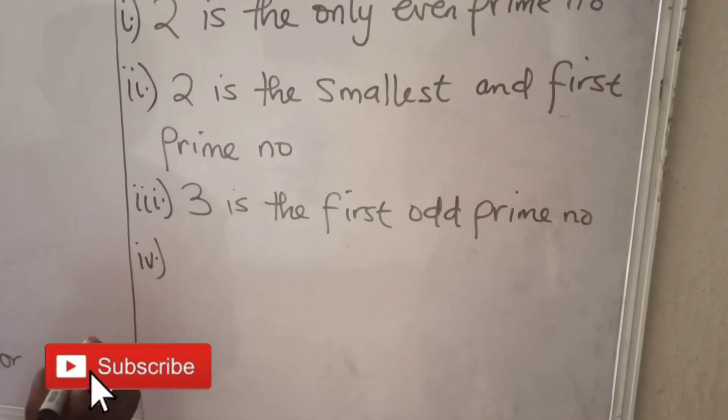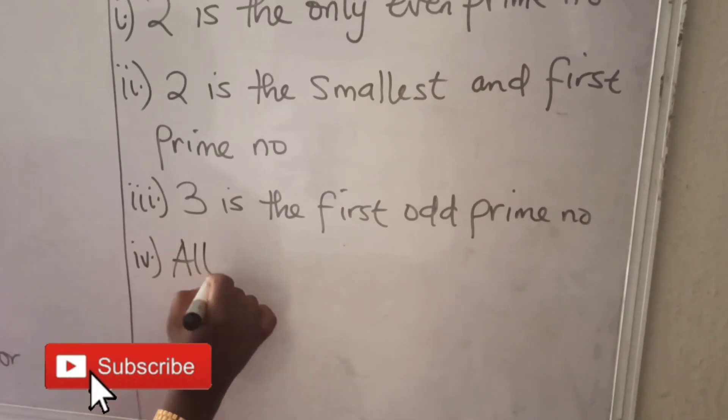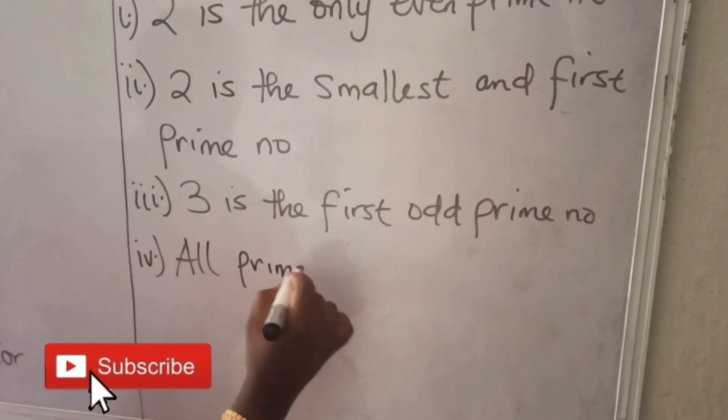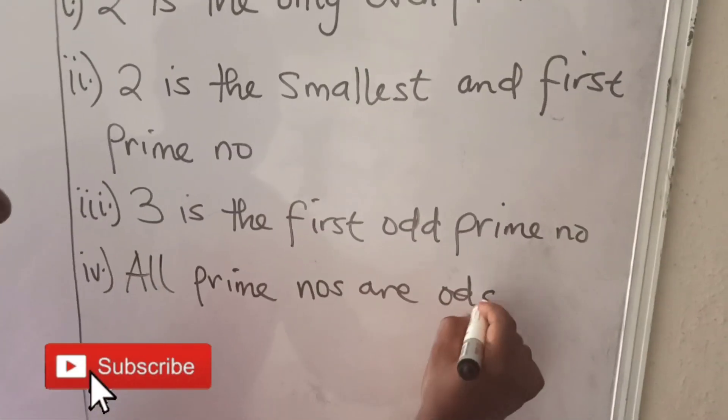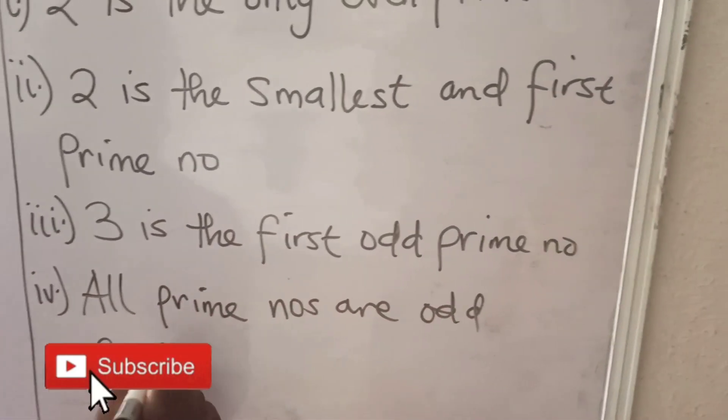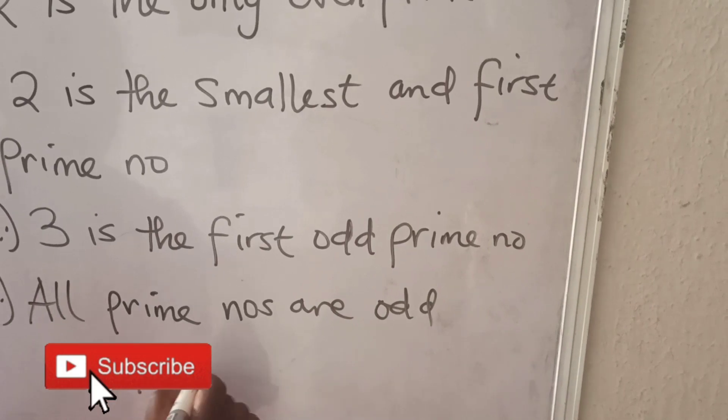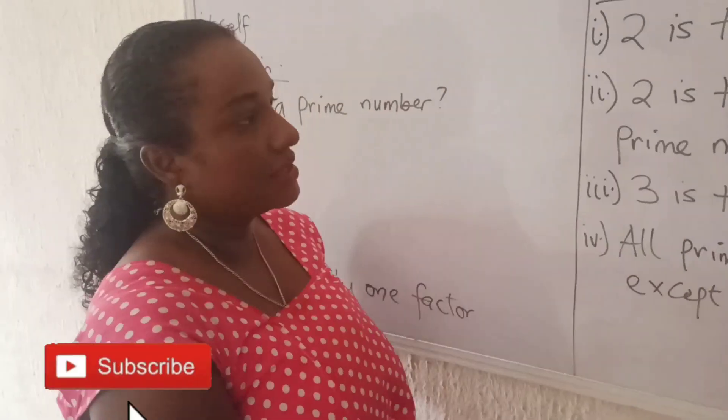And lastly, all prime numbers are odd except 2. Please don't forget these facts.